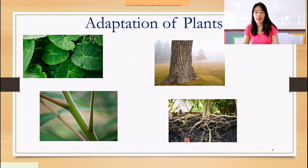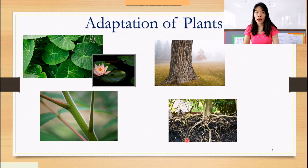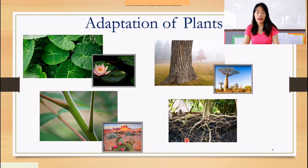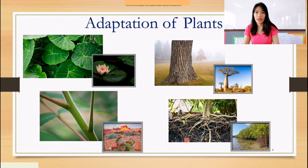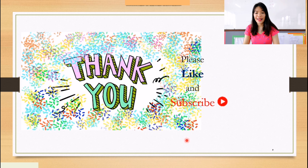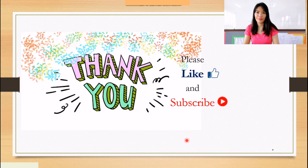As you can see, these plants use their leaves, trunk, stem, and roots to survive. For leaves, we have the lotus. For the trunk, we have the baobab. For the stem, we have the cactus. And for roots, we have the mangrove trees. I hope you learned something in this video. Thank you very much for watching. Don't forget to like and subscribe. Bye!